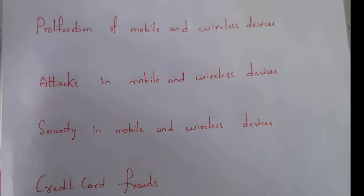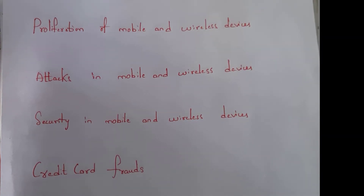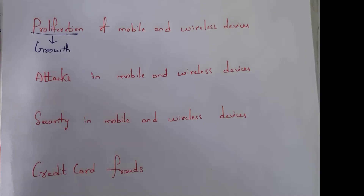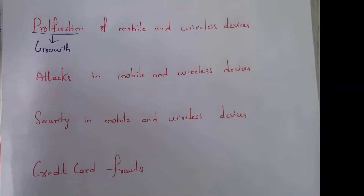Let's start our video. First one is proliferation of mobile and wireless devices. The meaning of proliferation is growth — growth of mobile and wireless devices. There is a lot of growth in mobile and wireless devices day by day. In olden days we used landphones for communication, whereas now at present we are using 4G smartphones for communication.